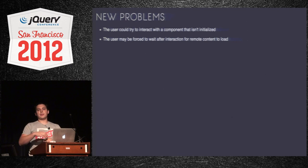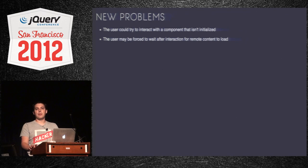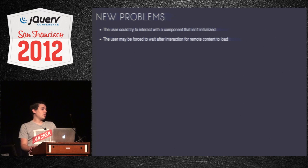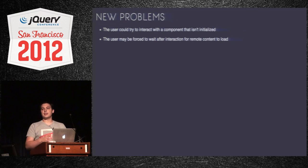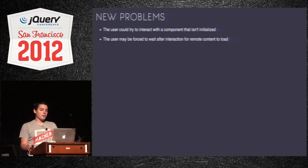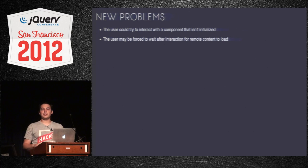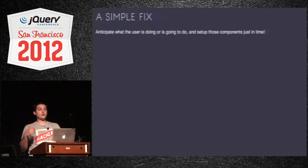We've solved these problems by following contextual jQuery, but it introduces new problems. Whereas once everything was ready to go all the time, now there's a real risk that a user will go to interact with a portion of your page that, while the page loaded quickly, that component is not ready to go — giving them a bad experience because they can't manage the carousel or sign up for your product. The other problem is the user may be forced to wait if you've waited to load remote content. The simple fix is to anticipate what the user is going to do and do it.